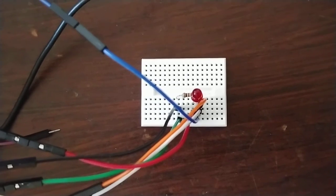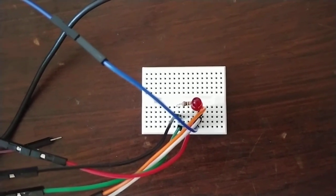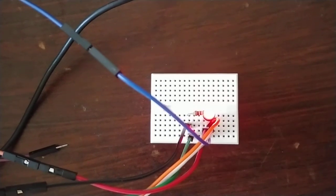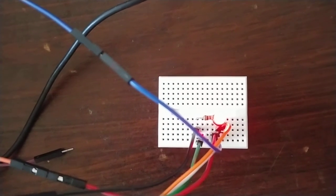Alrighty. Let me turn on the signal generator to 5 volts positive and the LED should go on. It does. I can see it blink, so I did wire it up correctly.